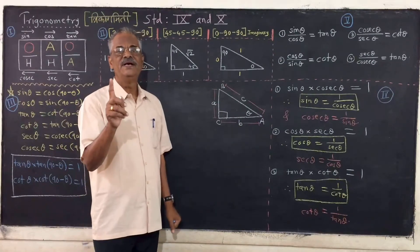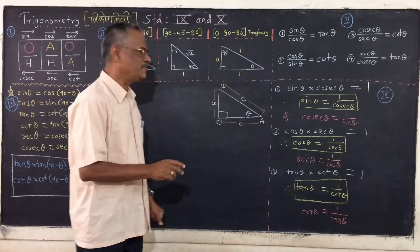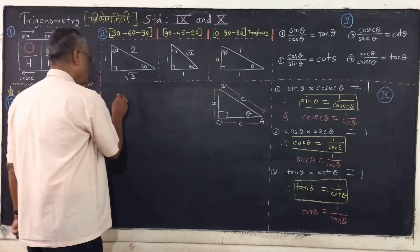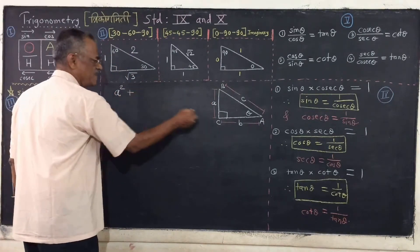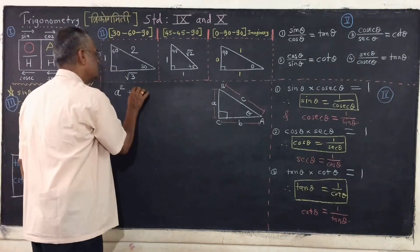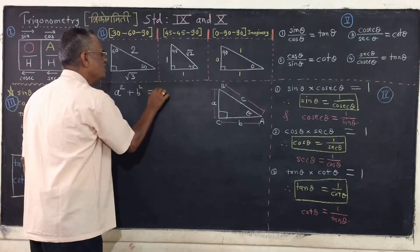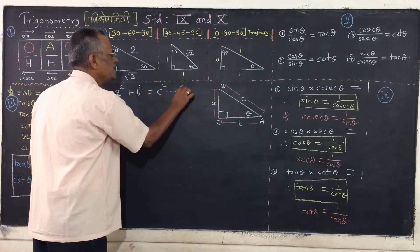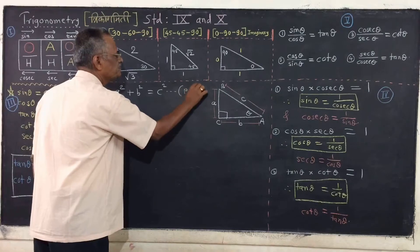And if we use the Pythagorean theorem, you know that the sum of the squares of two sides — a squared plus b squared — is equal to c squared. This is the Pythagorean theorem.